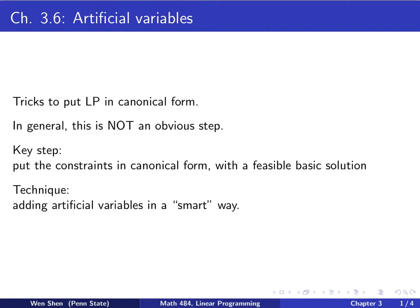As we have commented before, putting the LP problem in canonical form is not an obvious step. In general, it's not easy. The key step in solving a linear programming problem is to put the constraint in canonical form with a feasible basic solution. Once you have done that, then the objective function can be easily expressed in terms of the non-basic variables. So that step is relatively easy. We'll be focusing on the key step here.